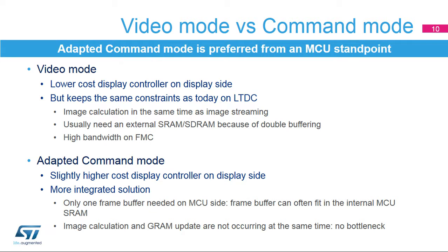The choice between video or adapted command mode has a big impact on the solution's architecture and cost. From the MCU standpoint, adapted command mode is preferred for cost-optimized solutions. As video mode does not require graphics RAM on the display side, this solution is often used for large displays, which reduces cost. The constraints in terms of bandwidth and memory usage on the MCU side remain the same as for today's LTDC-based solutions. Most of the time, an external RAM is required for double buffering of the frame buffer.